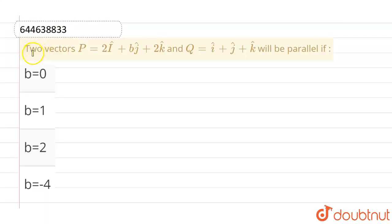Hello everyone. If we talk about this question, the given question involves two vectors. The first vector is p vector which is written as 2i cap plus bj cap plus 2k cap, and the second vector q vector equals i cap plus j cap plus k cap will be parallel if the given options are b equals 0, b equals 1, b equals 2, and the last option is b equals minus 4.